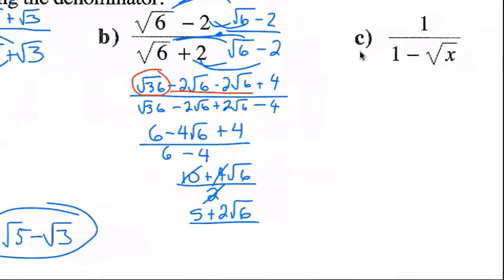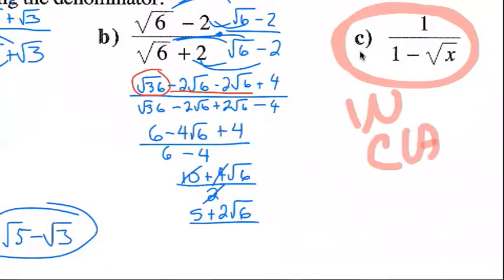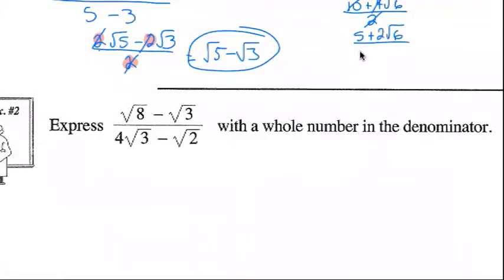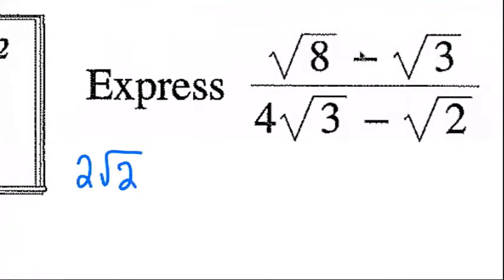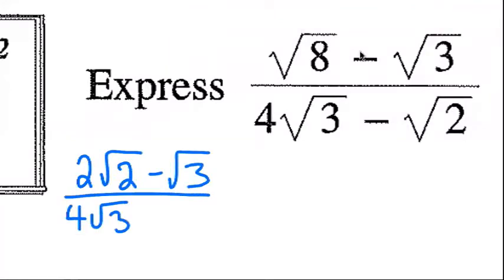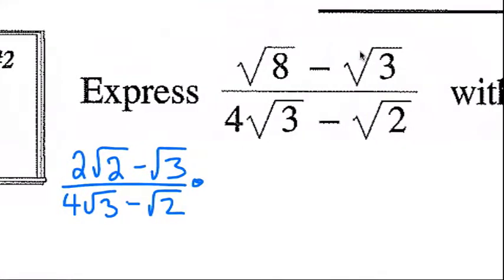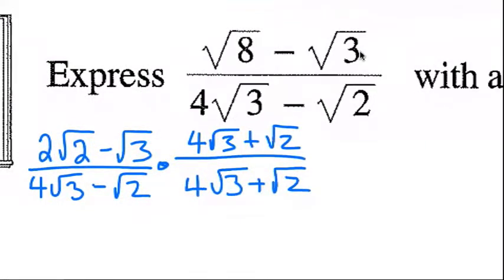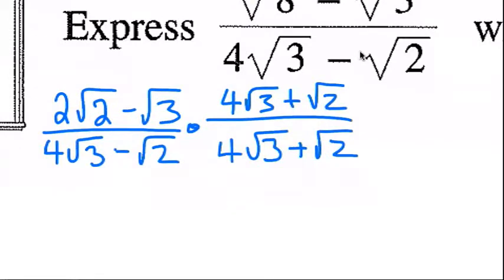I'm going to save the next one for an in-class example, and also the word problem below as an in-class example. But we can do this one: square root of 8 minus square root of 3, divided by 4 square root 3 minus square root 2. This here can be simplified before we even begin. Square root of 8 is 2 root 2, so I have 2 square root 2 minus square root 3, all over 4 square root 3 minus square root 2. I'm going to multiply by the conjugate, which is going to be 4 square root 3 plus square root 2.